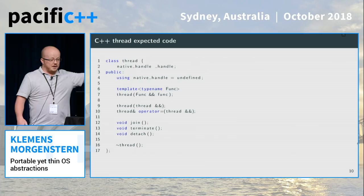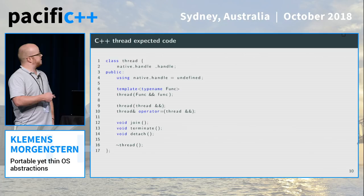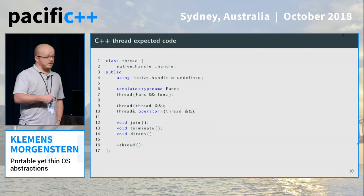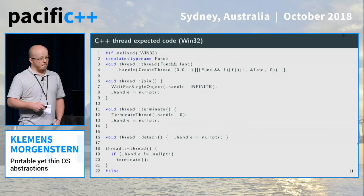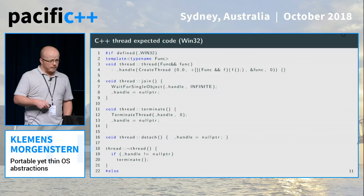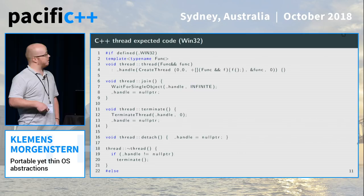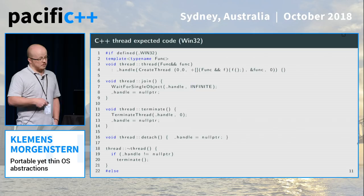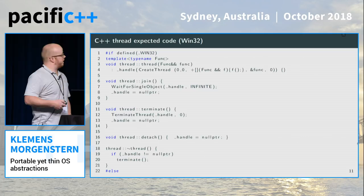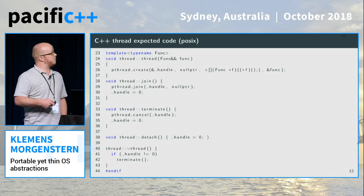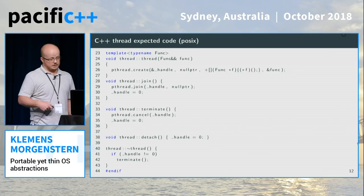You would expect a constructor where you pass in a function — like in line 7 — then a join at lines 12–14, a terminate, and a detach. The implementation would call CreateThread in line 4 to launch the thread, a join waiting in line 7, and TerminateThread in line 12; if the thread isn't finished in the destructor you call terminate. That's the Windows API — three function calls. Same on POSIX: you have pthread_create, pthread_join for joining, and pthread_cancel as the alternative to terminate.